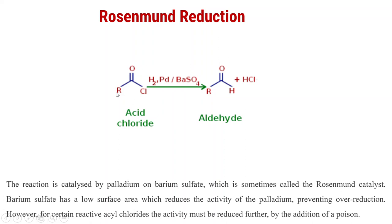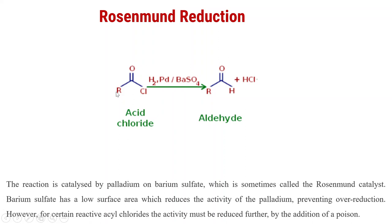This is acid chloride: RCOCl. And the product is the aldehyde RCHO — meaning Cl is converted into H. This is the replacement of Cl by H. What type of reaction is this? This is a reduction. Why is this called partial reduction? Because the oxygen is not reduced here.